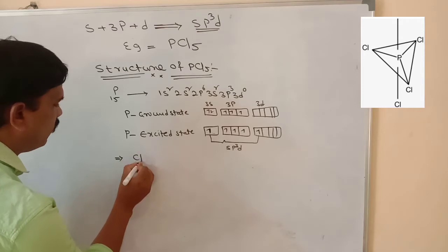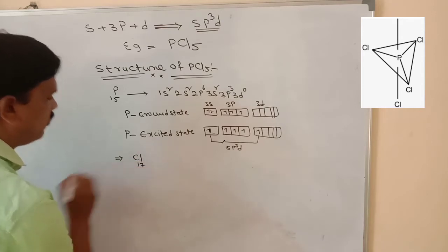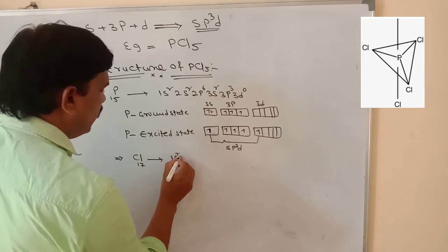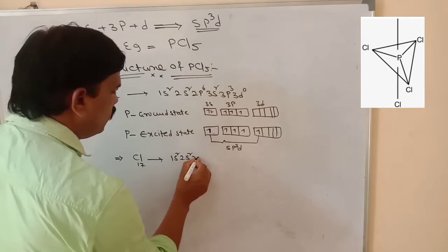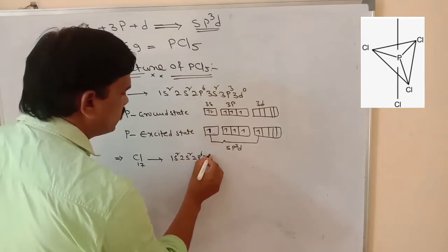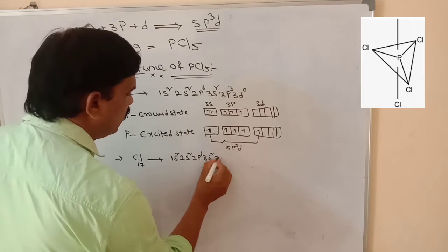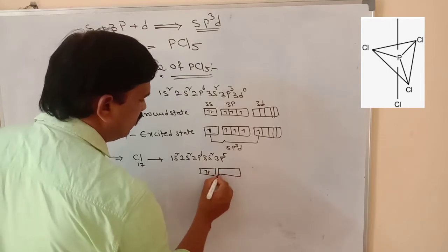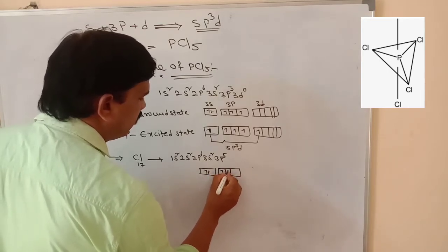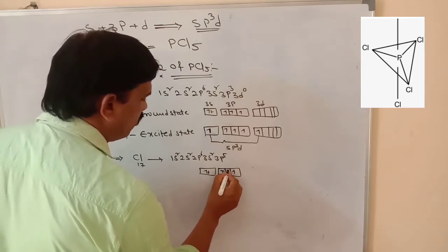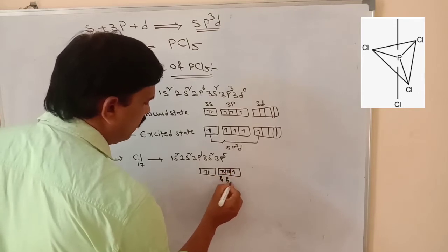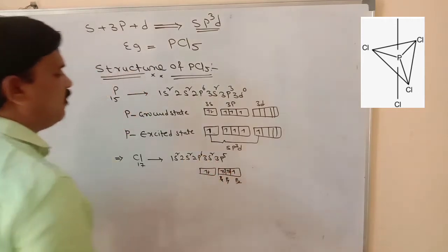Chlorine has atomic number 17. Its electronic configuration is 1s2, 2s2, 2p6, 3s2, 3p5. In 3s there are 2 electrons. In 3p5, each orbital gives 1 electron then pairing starts. This gives us px, py, and pz orbitals.